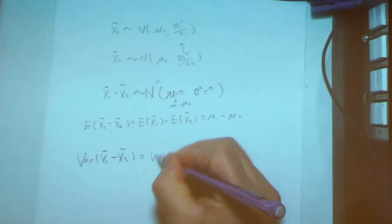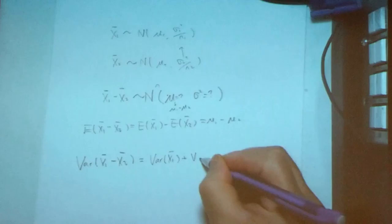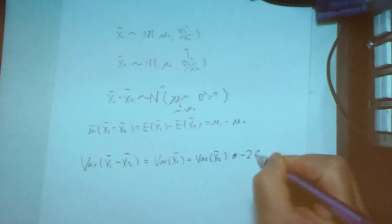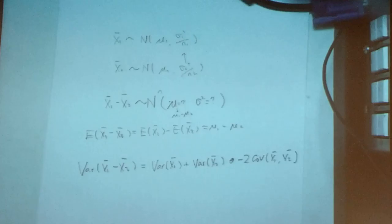So, this is the variance. If you still remember the formula that we discussed in the basic probability, it's the variance of this one plus, of course, now it's the negative, okay, minus two times the covariance of X̄₁ and X̄₂.